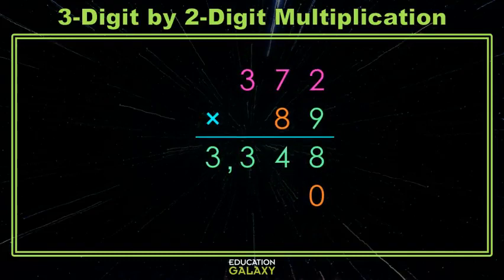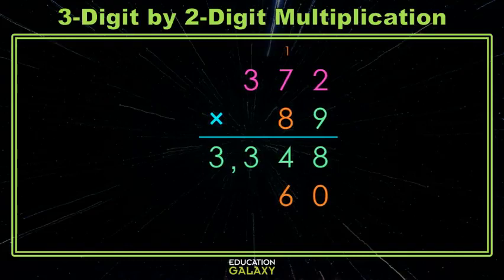So 2 times 8 is 16, carry the 1. 7 times 8 is 56, plus the 1 we carried is 57, carry the 5. 3 times 8 is 24, plus the 5 we carried is 29. And if you want to keep things tidy, here's your comma.